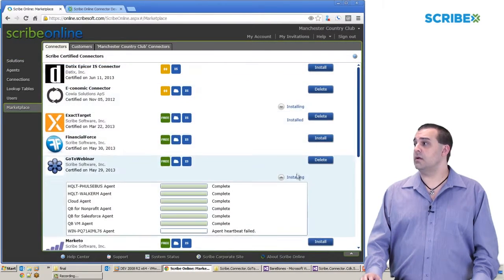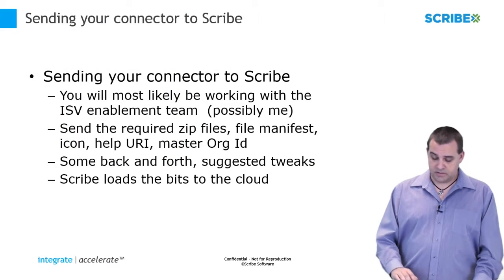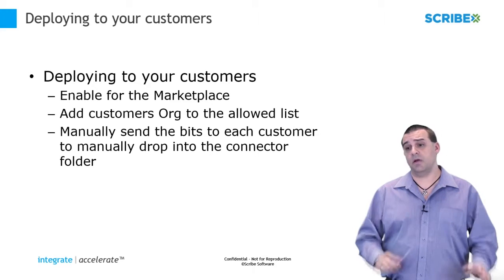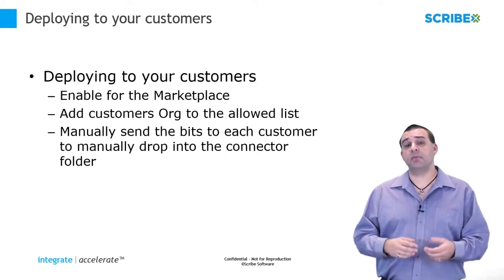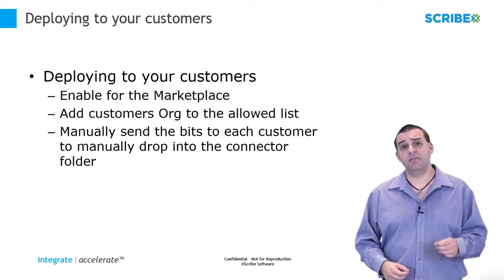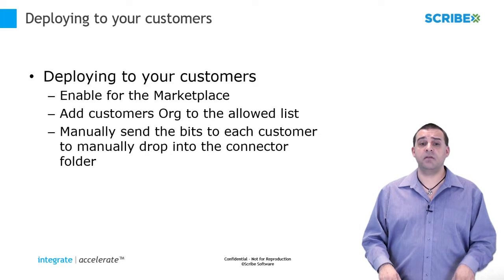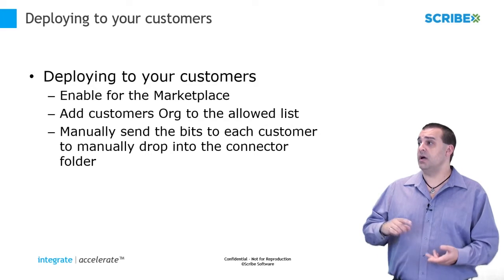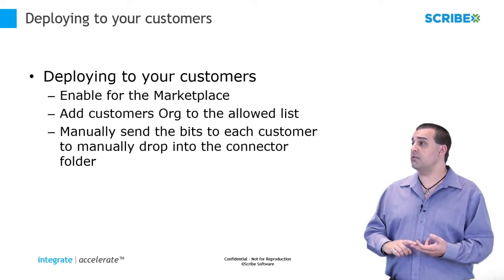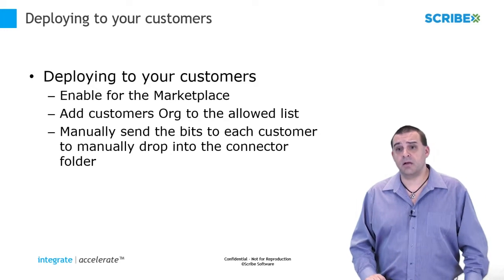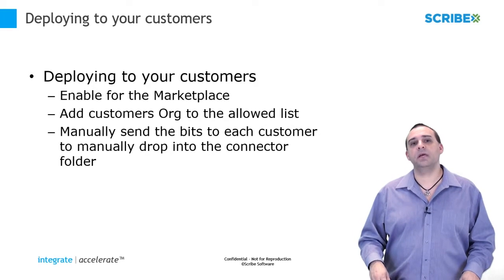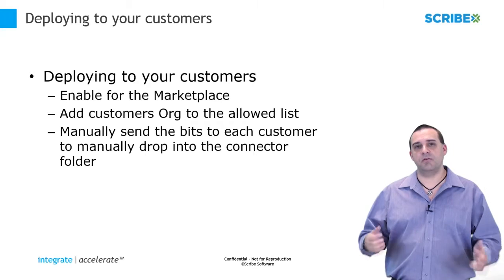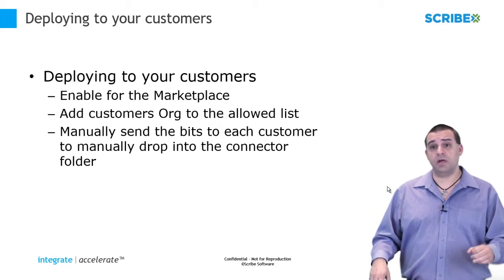That is our marketplace. Deploying to your customers: once we enable that master organization and put the connector up there, you'll need to go into your master organization and determine whether you want that connector visible to the world or whether you want more finite control over who gets to use it. You can enable it for the marketplace, add customers to the organization allowed list, or if you don't deploy in our cloud, you can manually send the directory to each customer — though that's a deployment method we don't recommend because you don't have control over updates and upgrades.